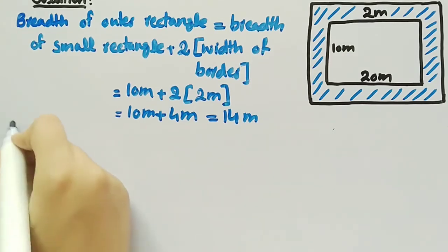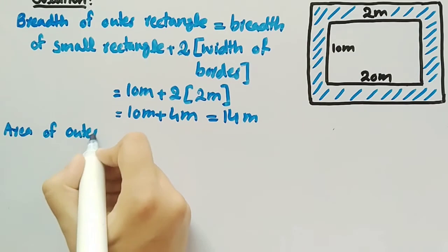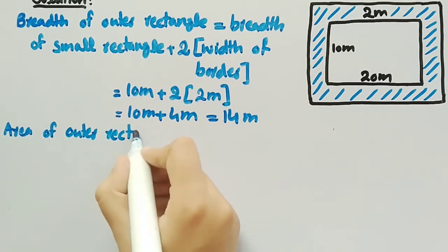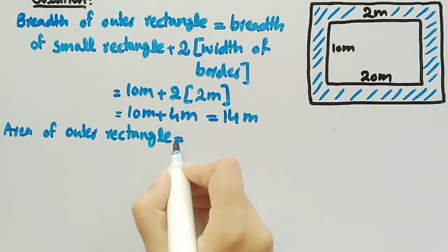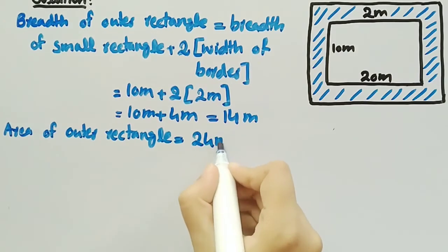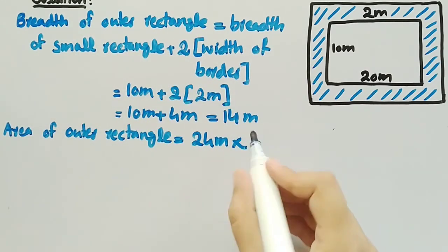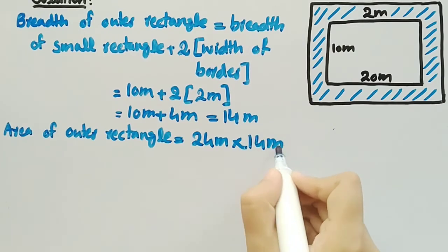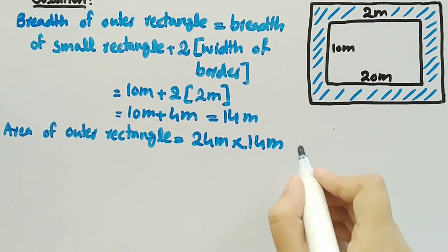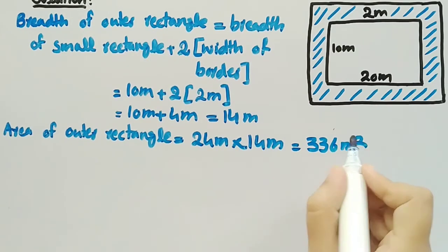Since we have found the length and breadth of outer rectangle, now we will find area of outer rectangle, which is equal to length of outer rectangle multiplied by breadth of outer rectangle: 24 meters multiplied by 14 meters. When we multiply these two quantities we get 336 meter square, and this is the area of outer rectangle.